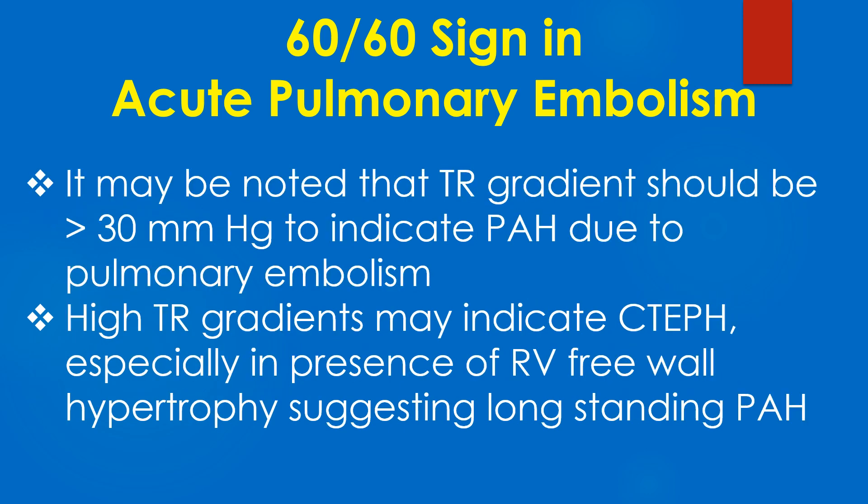It may be noted that the TR gradient should be more than 30 mmHg to indicate pulmonary arterial hypertension due to pulmonary embolism. High TR gradients may indicate chronic thromboembolic pulmonary hypertension, especially in the presence of right ventricular free wall hypertrophy, which would suggest long-standing pulmonary hypertension.